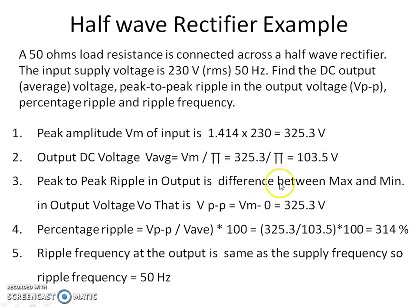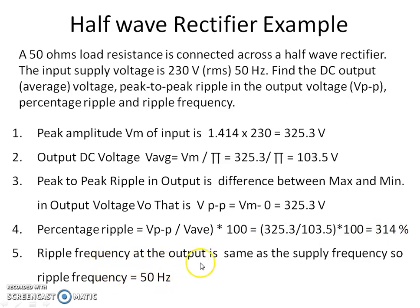The peak-to-peak ripple in the output is the difference between maximum and minimum output voltage, which equals Vm − 0 = 325.3 V. Percentage ripple is (Vpeak-to-peak / Vaverage) × 100 = 314%, which is very high. The ripple frequency equals the supply frequency, as seen in the waveform, so the ripple frequency for a half-wave rectifier is 50 Hz.